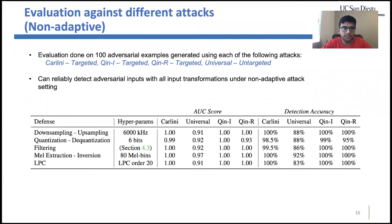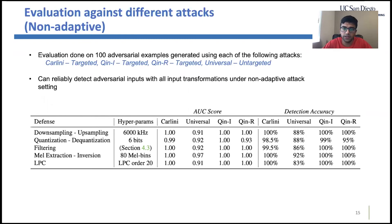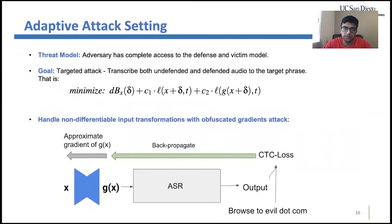In the non-adaptive attack setting, we find that we can reliably detect adversarial examples using various transformation functions. It is easier to detect targeted adversarial examples crafted using the C&W and Kenanr attacks, and for many transformation functions we achieve an AUC score of 1 for targeted attacks.